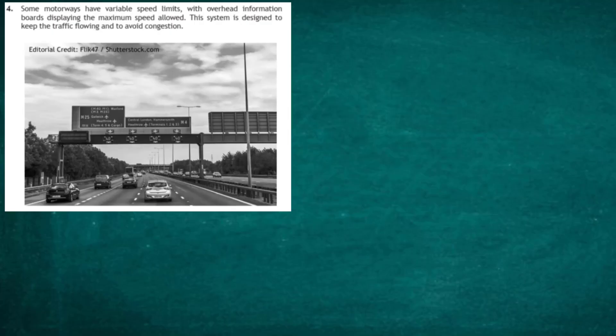Question 4 from section 2 of the 2017 Higher Physics examination. Some motorways have variable speed limits with overhead information boards displaying the maximum speed allowed. This system is designed to keep traffic flowing and avoid congestion. The task says: in this system the flow of traffic is observed and the maximum speed to be displayed is determined using speed equals frequency times wavelength.